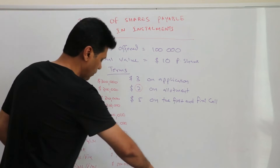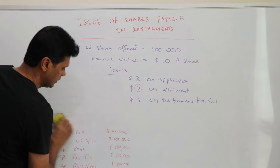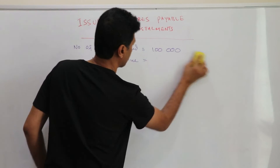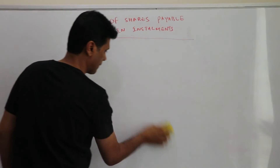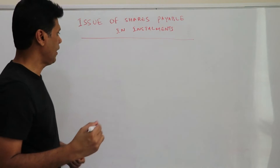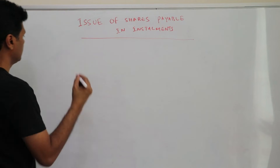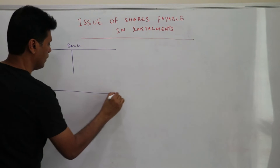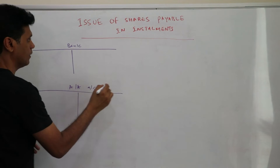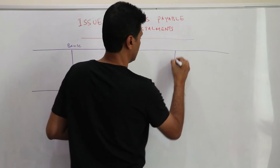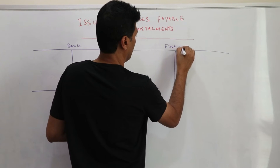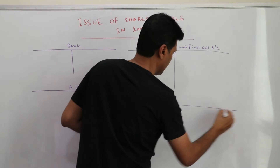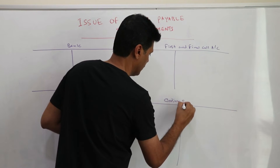Those are the journal entries that need to be passed. Now let's move on to the ledger accounts. We need a bank account, an application and allotment account, a first and final call account, and finally an ordinary share capital account.